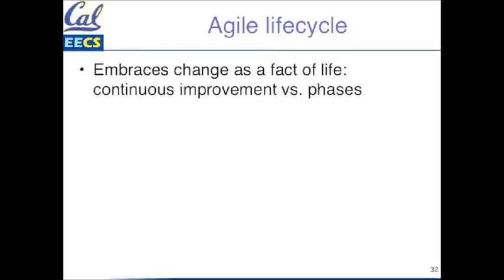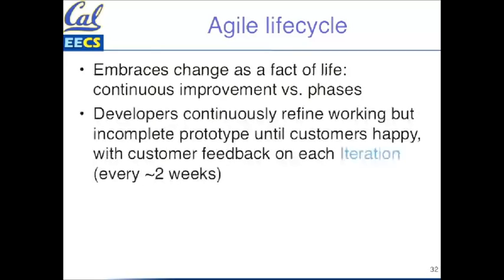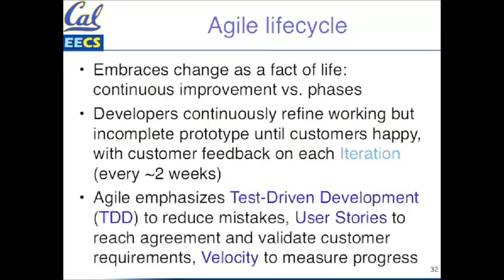The Agile lifecycle embraces change as a fact of life through continuous improvement. You go through iterations repeatedly rather than big phases, continuously finding a working but incomplete prototype until the customer is happy, with customer feedback on every iteration. In the real world it's probably every two weeks; in this class we'll do one-week iterations to maximize learning. Agile also emphasizes test-driven development — you write the test before you write the code — user stories where the customer tells you what they want, and velocity, measuring how fast your team completes user stories.